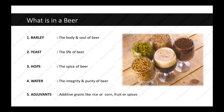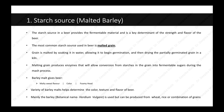The first ingredient in beer making is your starch source — malted barley or any other grain. The starch source provides the fermentable material and is a key determinant of the strength and flavor of the beer. The most common starch source is malted grain. Grain is malted by soaking it in water, allowing it to begin germination, and then drying the partially germinated grain in a kiln. Malting grain produces enzymes that allow conversion of starches into fermentable sugars during the mash process. Barley malt gives beer its malty sweet flavor, color, and foamy head.